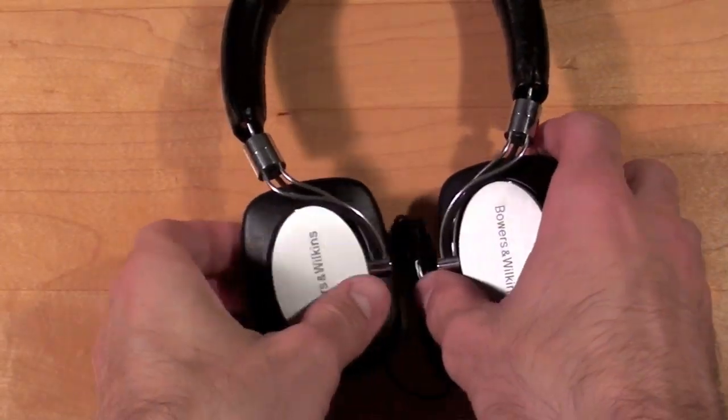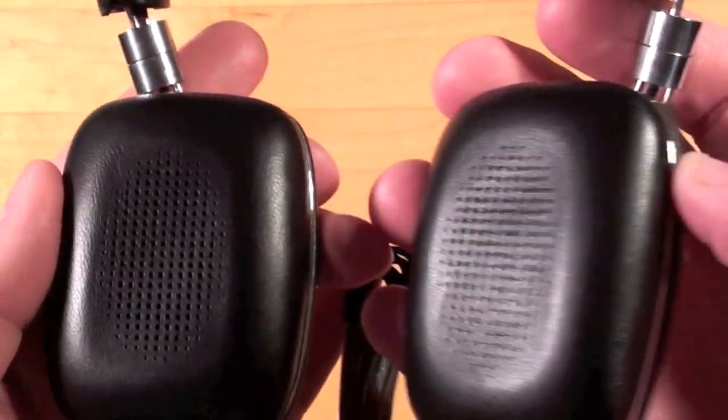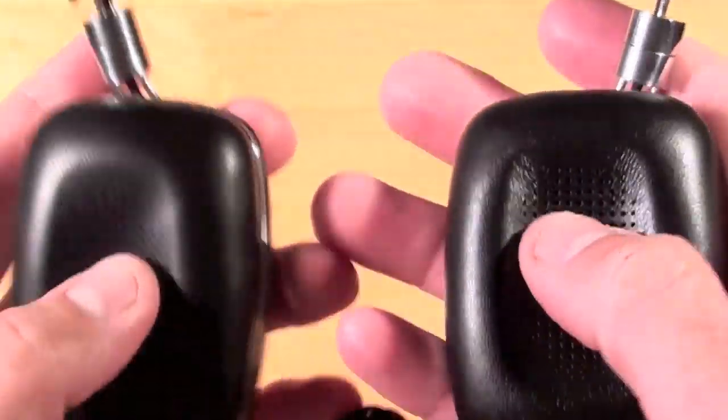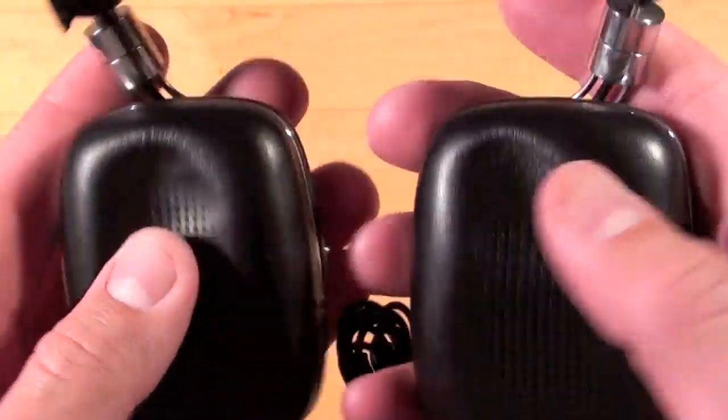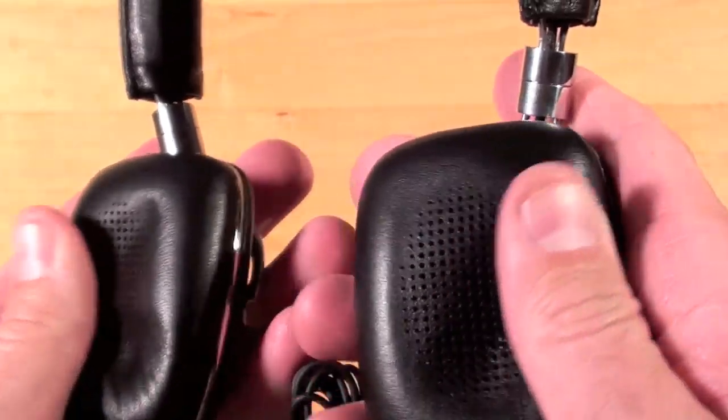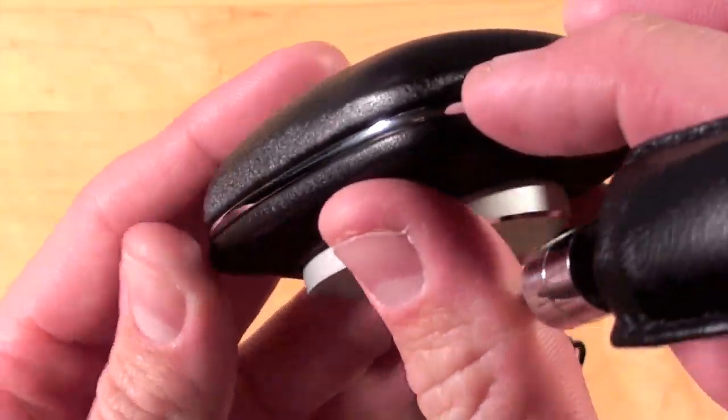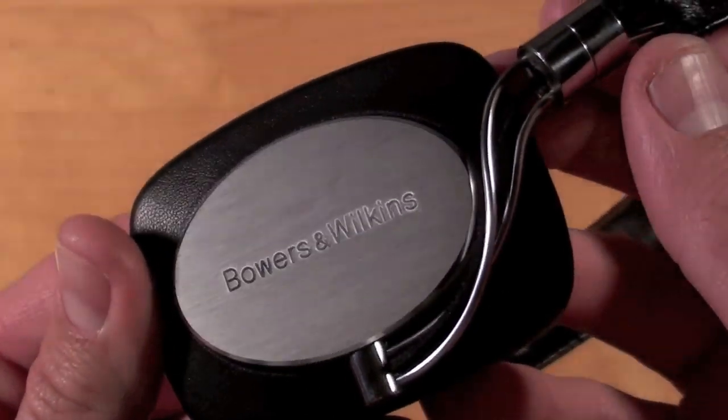Take a look around the headset itself. You can see that they are made out of this very nice high-quality sheepskin leather. It wraps both the ear pieces and the back of the headphones and the headband. The ear pieces themselves are padded with memory foam so they shape to your ear.